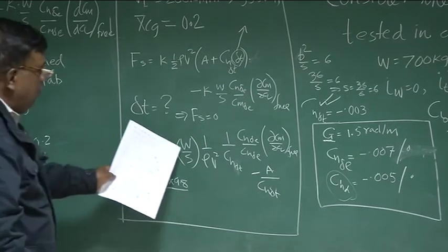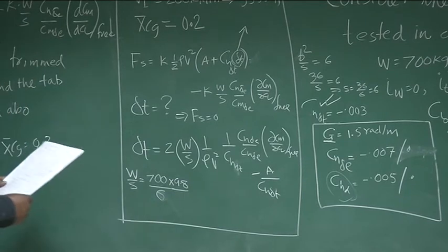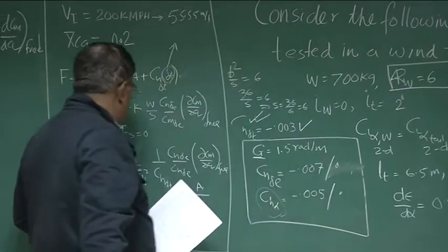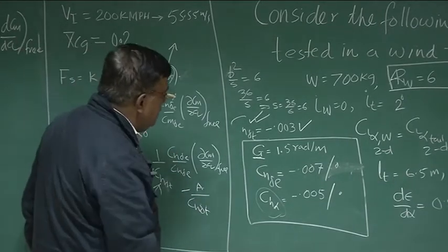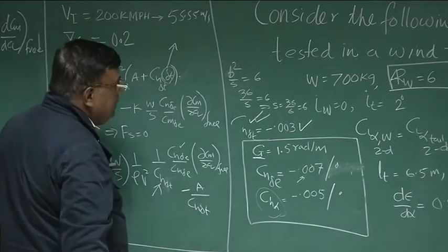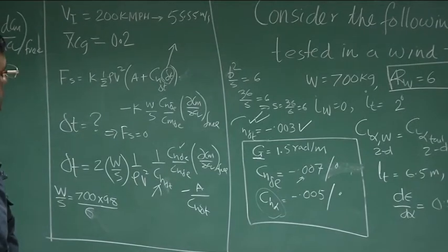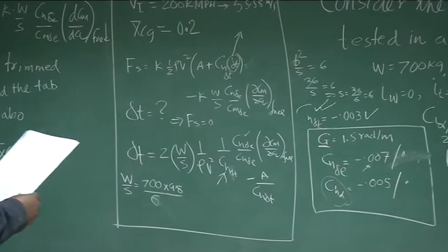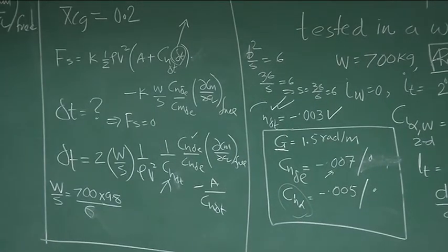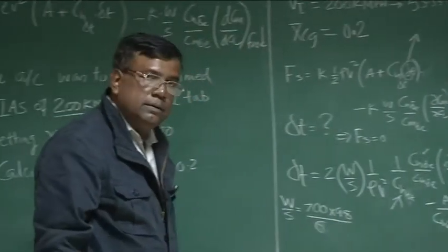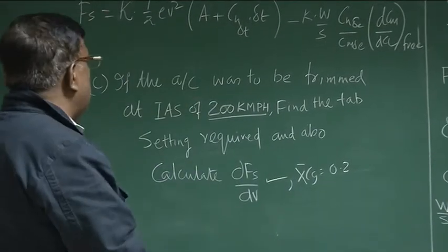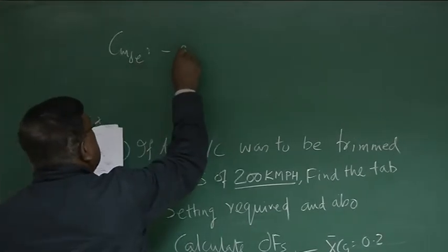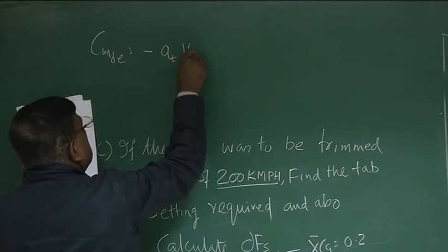Okay. So this is W by S that will come here. ρ, what is the ρ? ρ will be 1.225 because we are talking about sea level condition. Next, CH_δt, CH_δt is given minus 0.003, that value comes here. CH_δe minus 0.07 per degrees come here. CM_δe is CM_δe given anywhere? Can you check? If it is not given? If it is not given, either you have to find out or this should have been given. So let us see where it is in the question. The CM_δe is given or not. CM_δe is not given. So we cannot solve this problem. Is it correct? We cannot surrender.